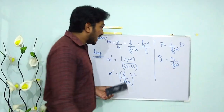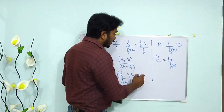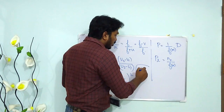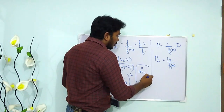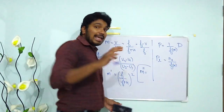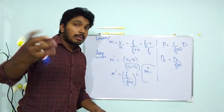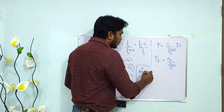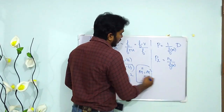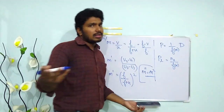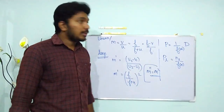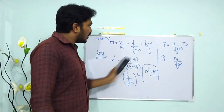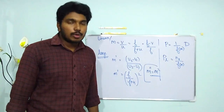Area magnification equals M squared — the same result as we learned in the case of a mirror. So the magnification — linear, longitudinal, and area — should now be clear.